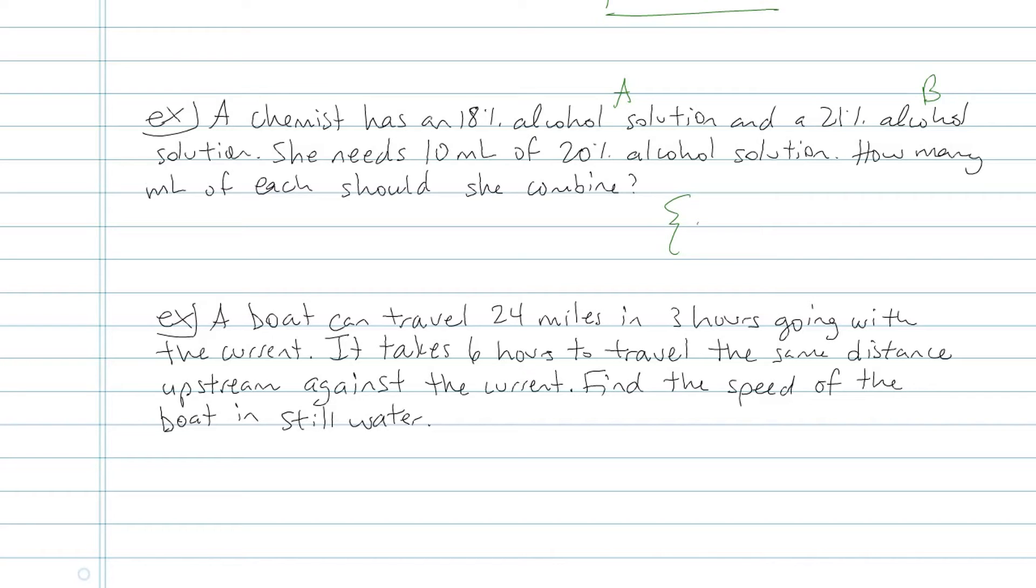First thing I know is she has 0.18A. That's concentration times amount, plus 0.21B, concentration times amount. It needs to equal 0.20. That's the concentration, and now I need the amount, 10, because my amount of the mix is 10. And then amount only, A plus B is equal to 10. It's very, very similar to the grocer problem we did in the previous problem, or the grocer situation we did in the previous example. So you look for similarities there.